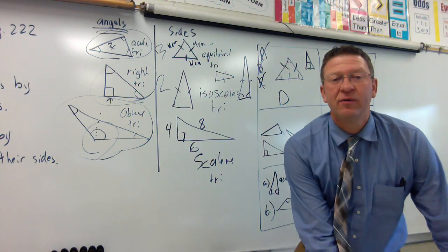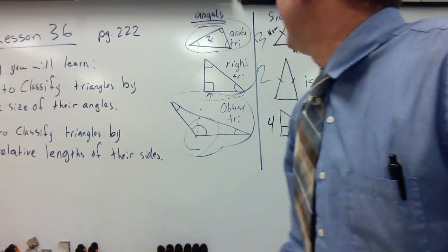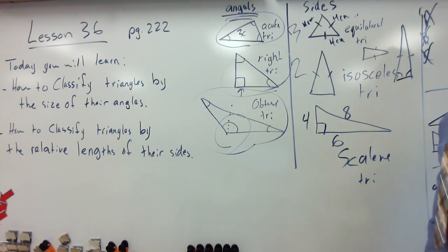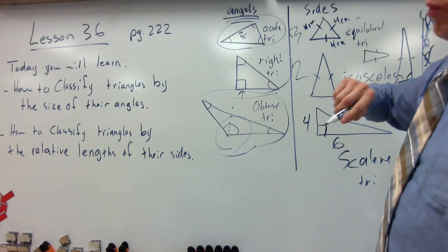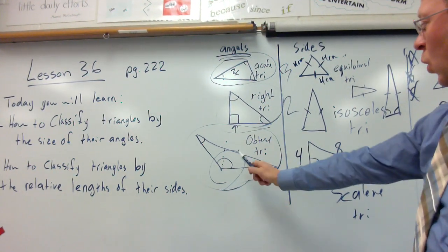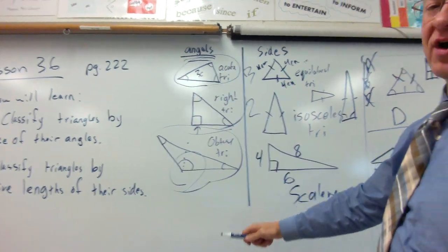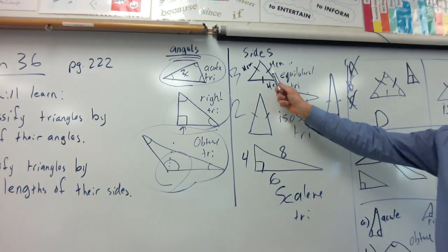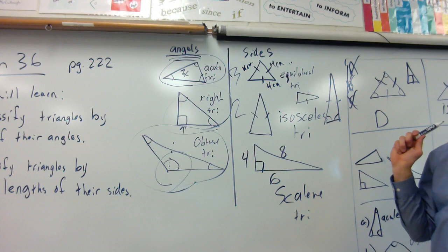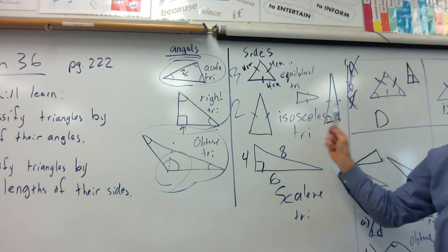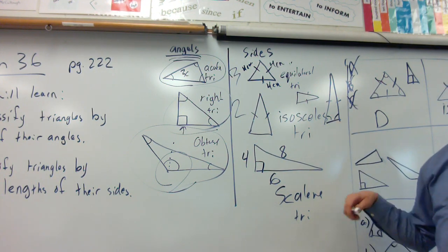All right, guys. Quick review. Triangles today. All angles acute, acute triangle. One right angle, right triangle. One obtuse, obtuse triangle. Sides. All the sides the same, equilateral. Two sides the same, isosceles. No sides the same, scalene.